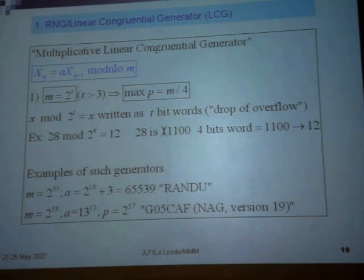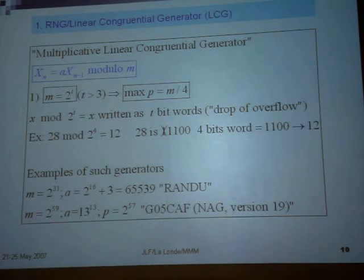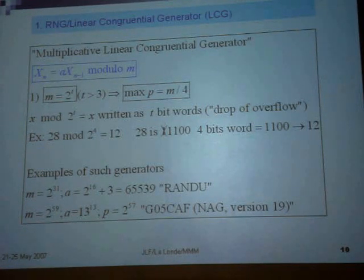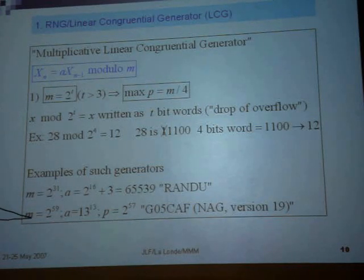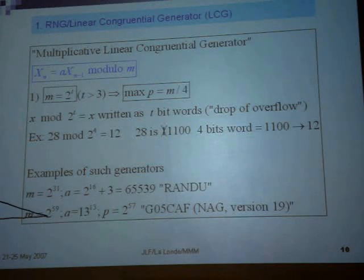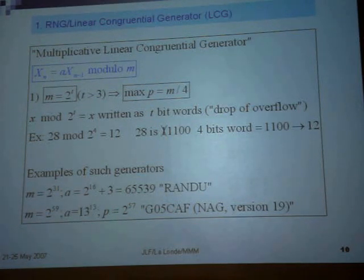So that means you just have to withdraw the overflow. It's very simple — you don't need anything. You just write the number in binary notation. Examples of such numbers: m to the power of 31, the famous Randu, which is horrible, and this one, which is not so horrible at least in the minds of people — M2 to 59, A13 to 13, with a large period.